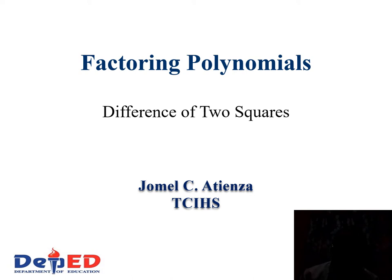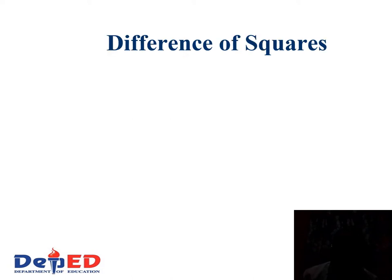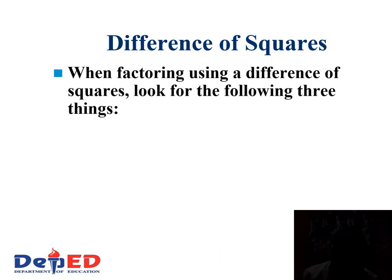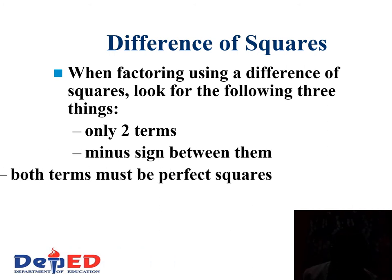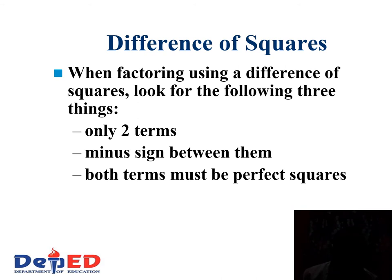Polynomials — difference of two squares. When factoring using a difference of two squares, look for the following three things: one, only two terms; two, a minus sign between them; and three, both terms must be perfect squares. Therefore, that is the difference of two squares.